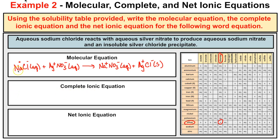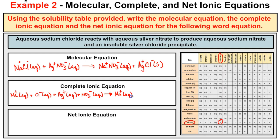For the complete ionic equation: NaCl dissociates into Na⁺(aq) and Cl⁻(aq). AgNO₃ dissociates because it's aqueous into Ag⁺(aq) and NO₃⁻(aq). On the product side, NaNO₃ is aqueous so it dissociates into Na⁺(aq) and NO₃⁻(aq). AgCl is the precipitate — it does not dissociate because it is not aqueous; it is insoluble in water. So the complete ionic equation is: Na⁺(aq) + Cl⁻(aq) + Ag⁺(aq) + NO₃⁻(aq) → Na⁺(aq) + NO₃⁻(aq) + AgCl(s).